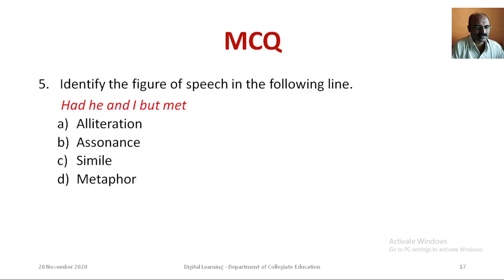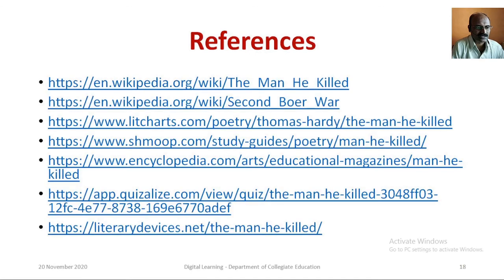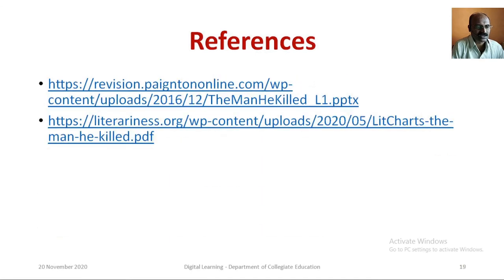Question 4: Identify the figure of speech in the following line — 'Had he and I but met.' Option A: Alliteration. Option B: Assonance. Option C: Simile. Option D: Metaphor. The correct answer is Option A: Alliteration. This is the list of websites and books referred. Thank you for watching.